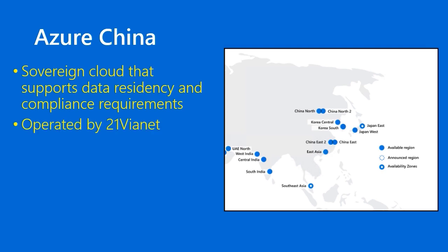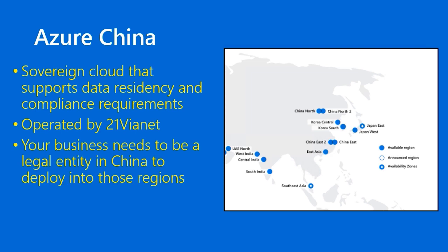Microsoft doesn't operate the Azure China Cloud itself. Instead, they've partnered with a Chinese internet service provider called 21ViaNet. You can see a screenshot on the right side of this slide from the Azure.com website centered on China, and you can see there are some dedicated China regions: China East and East 2, China North and North 2 specifically. In order to deploy to Azure China, your business needs to be a legal entity in China, and there's a separate set of requirements and compliance checkmarks you need to fulfill in order to perform those deployments.